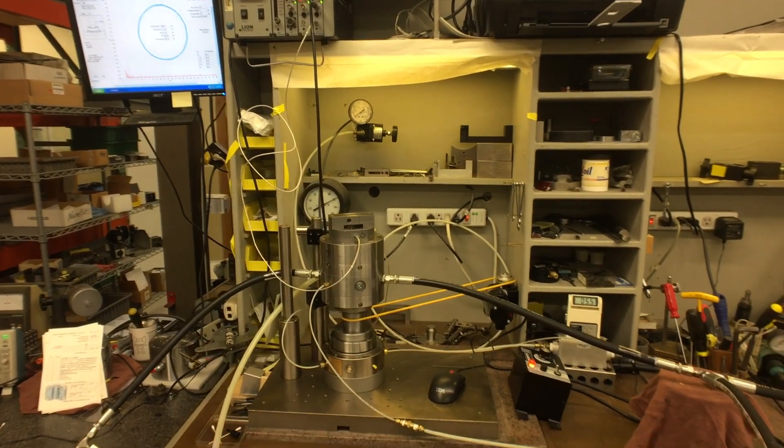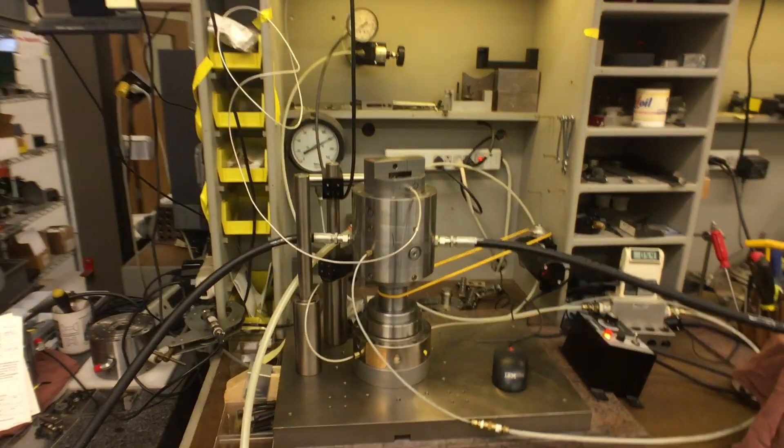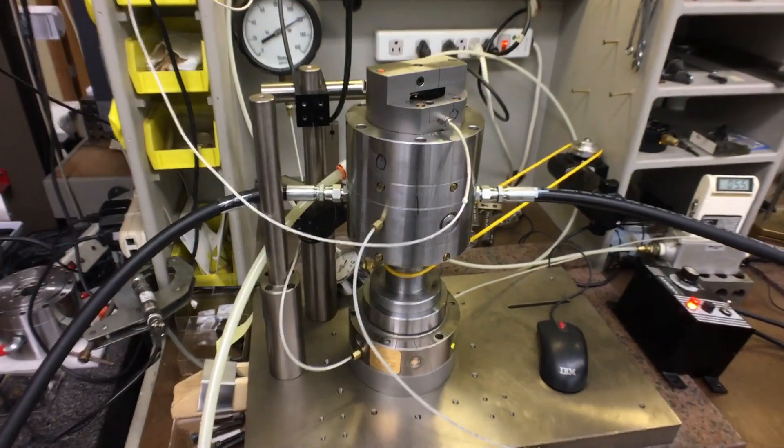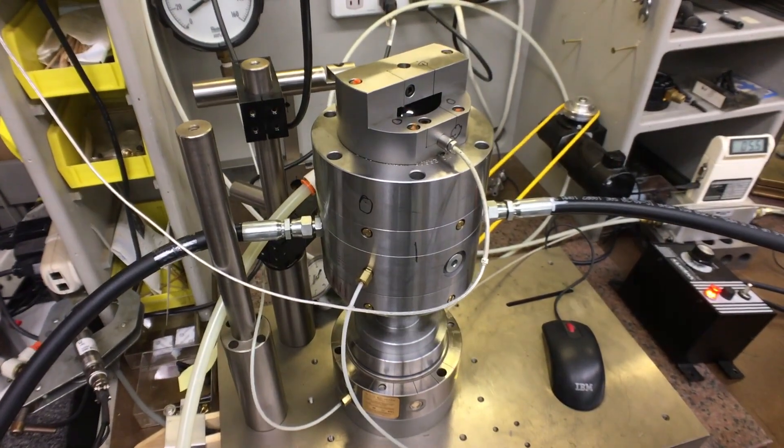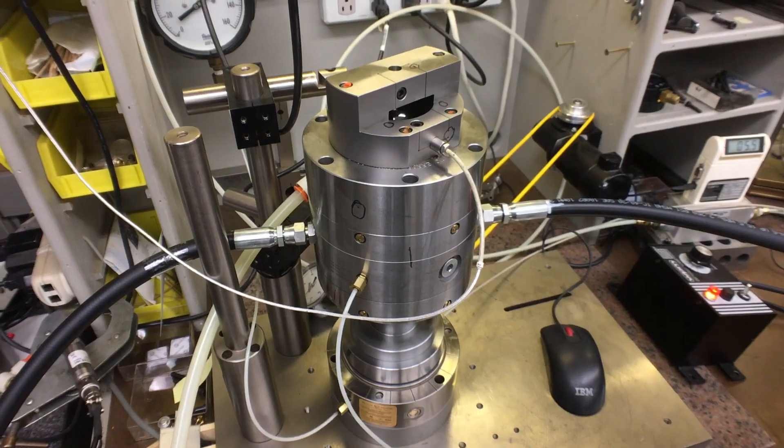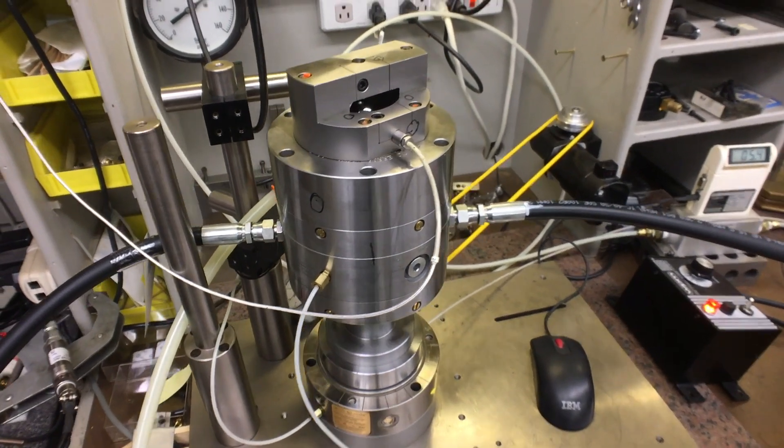There you see our test bed. Up in the upper left-hand corner is the air motion plot. Now you can see down here we're rotating our hydrostatic spindle on top of one of our air bearing spindles.